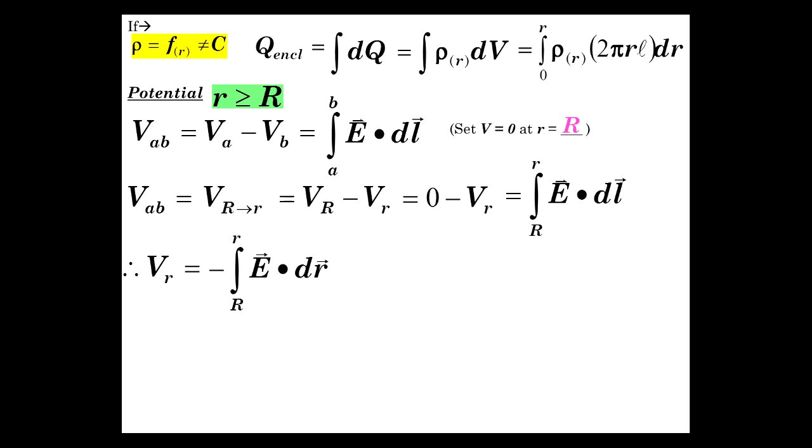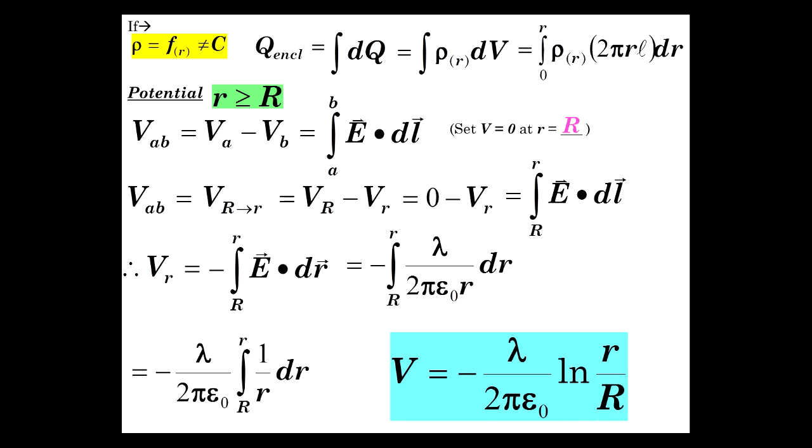So Vr is the negative integral of R to little r, E dot dr, dl becomes dr, which is negative E, the electric field out there. We discovered, in terms of lambda, it's lambda over 2 pi epsilon 0 r. And so we can bring out the constants, and integral of 1 over r dr is natural log of r.